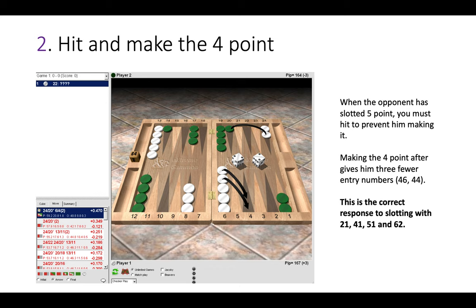So when your opponent slots with 2-1, 4-1, 5-1 and 6-2, it's better to hit and make the 4 point. Now if your opponent makes a 4-1 slotting play, of course there you have the option to hit twice. But that would be a blunder. It's much better to hit once and then strengthen your home board. Then you have options to pick up that second checker on a future roll. So this is the second rule.